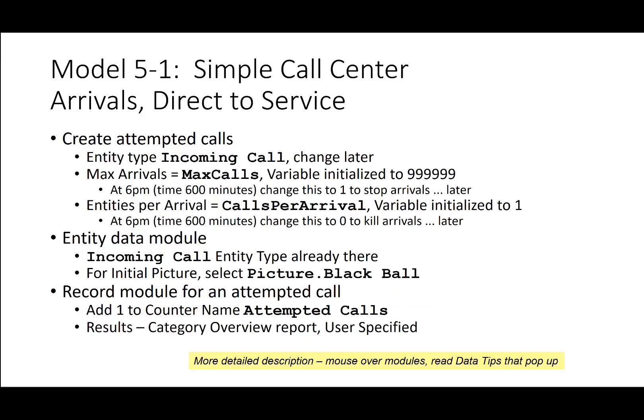Arrivals direct-to-service will create attempted calls using an entity type of incoming call. The max arrivals variable is initiated to 999,999 — a very high number. At 6 p.m., which is 600 minutes after the 8 a.m. start, this variable will be changed to 1 to stop the arrivals. The entities per arrival variable is initiated to 1 because we can only have one call per arrival, and at 600 minutes it will be changed to 0 so arrivals stop.